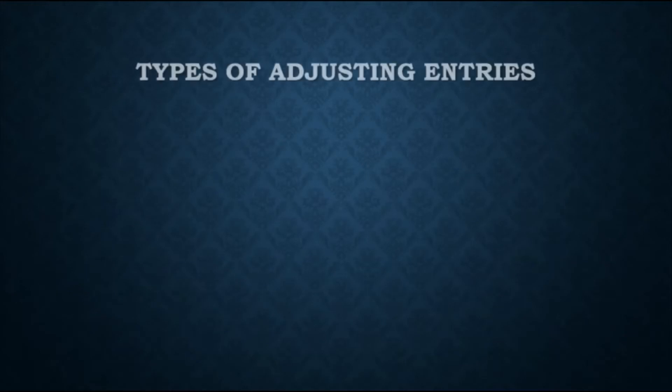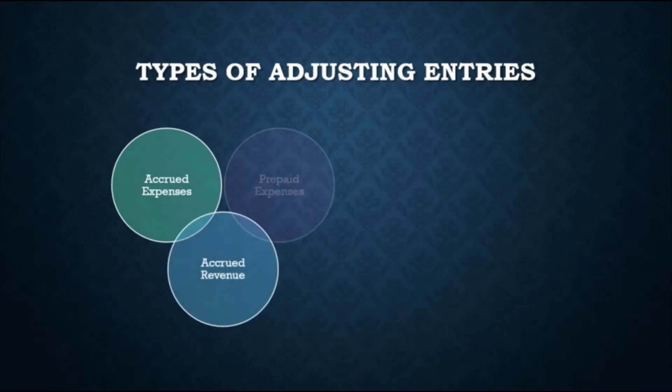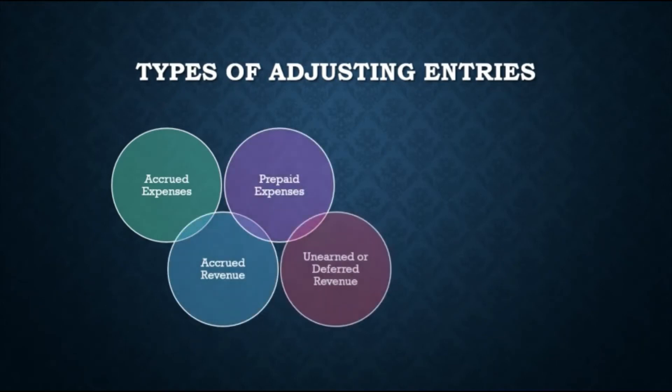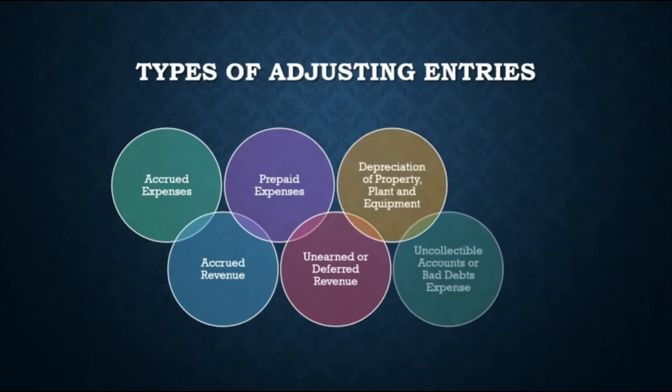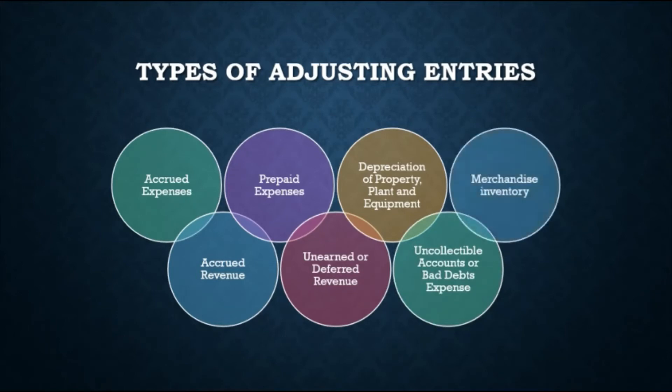Now that we know the accounting concepts behind adjusting entries, take note that adjusting entries are required every time a company prepares financial statements. Every adjusting entry will include one income statement account and one balance sheet account. Adjusting entries are usually prepared for the following items: accrued expenses, accrued revenue, prepaid expenses, unearned or deferred revenue, depreciation of property, plant and equipment, uncollectible accounts or bad debts expense, and merchandise inventory.